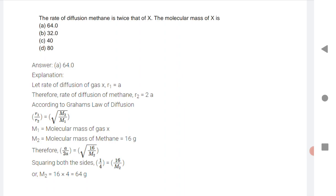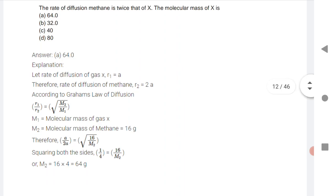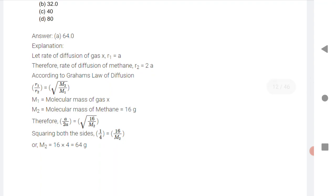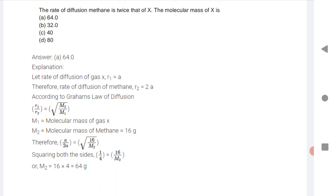So next, let the rate r1 be a and r2 be 2a. That is, the rate of diffusion of methane is twice that of X. So the rate of diffusion of X, that is r1, is a. r2 is twice, that is 2a. So we are keeping r1 and r2: a/2a equals to, we know what is the molecular mass.